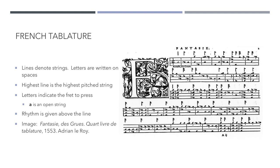Now, French tablature is similar, but with a couple of significant differences. The lines still represent the strings. However, the top line on the page refers to the highest pitched string on the instrument. Fret positions are indicated with letters rather than numbers, and they're written in the spaces above the lines rather than being written on the line itself. For example, A indicates an open string, B would be the first fret, C would be the second fret, etc. As in lute tablature, the rhythm is indicated above the line. The piece we're looking at here is actually written for the four-course guitar in 1553.